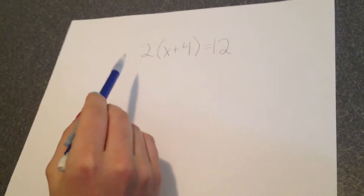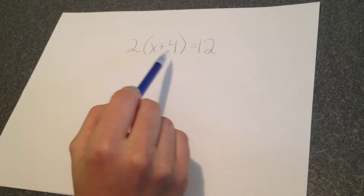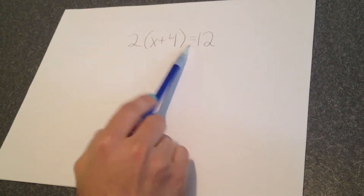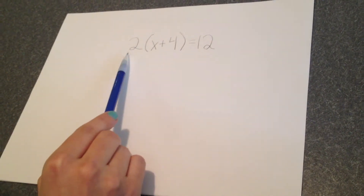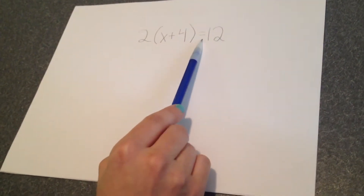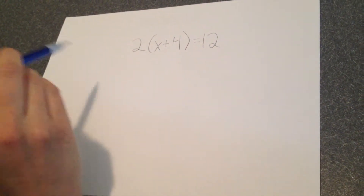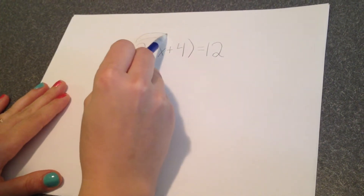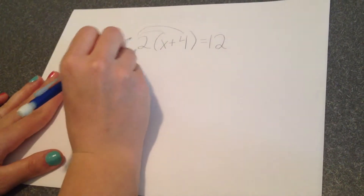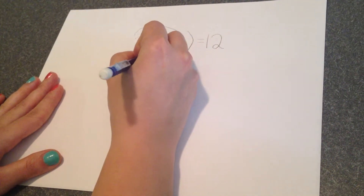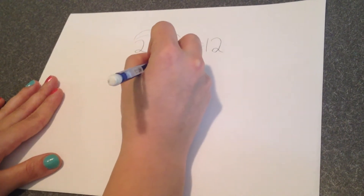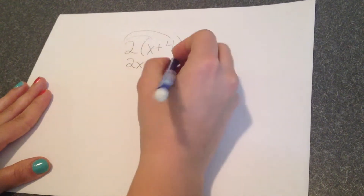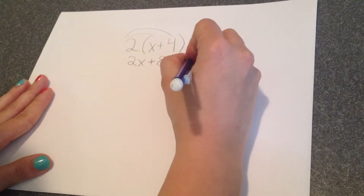Our first problem is 2 times the quantity x plus 4 equals 12. We can classify this as a linear equation because it has an equal sign. When we use the distributive property, we apply it to the expression — everything before the equal sign. Our first step is to distribute our 2 to the x and then to the 4 by multiplying. So 2 times x gives us 2x, bring down our positive sign, and 2 times 4 gives us 8. Then we bring down everything after the equal sign.